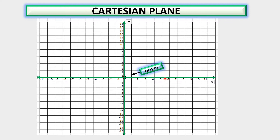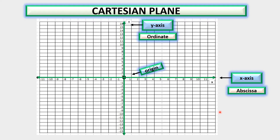For the vertical line, as you can see it has the label y — that is what we call the y-axis, sometimes also called the ordinate. For our horizontal line, you have x — that is our x-axis, also sometimes called the abscissa. So to repeat: the vertical line is our y-axis or ordinate, and the horizontal line is our x-axis or abscissa.